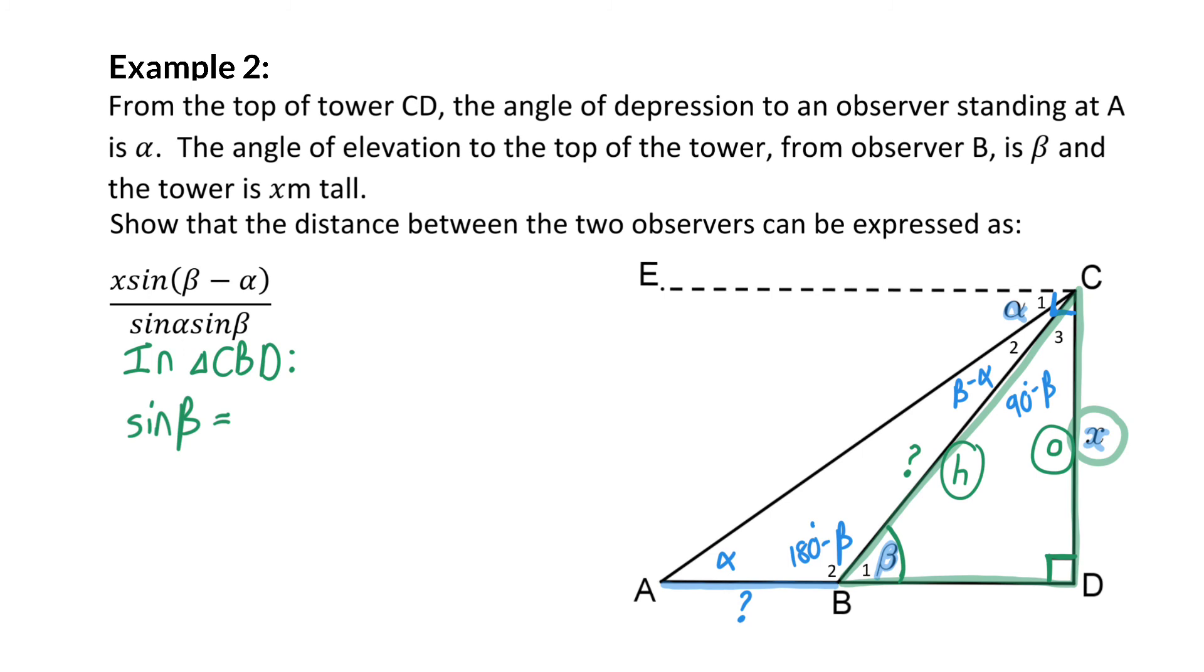This is the sin ratio of angle beta and that will be the opposite side, which is x, over the hypotenuse, which is BC. Next, to solve BC, I first need to multiply with BC on the left hand side and then divide by sin beta on the right hand side. Now, we have an abstract value for side BC and this means we can work in triangle ABC.